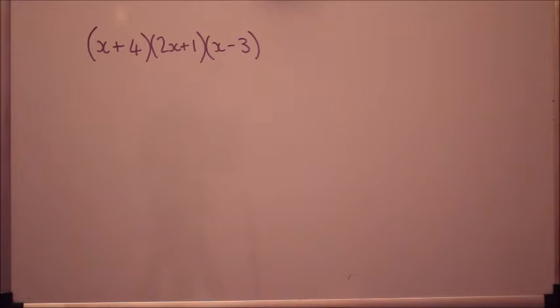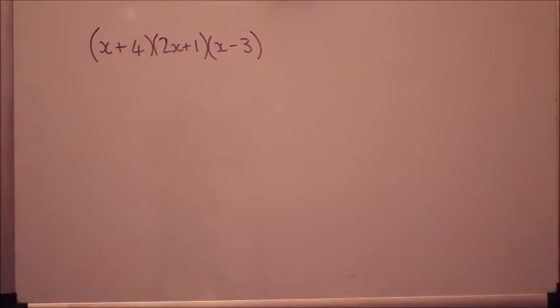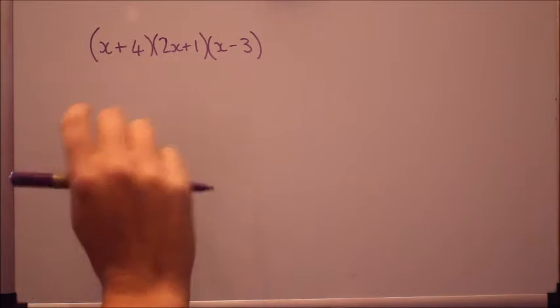First of all today I want to look at what happens if you're asked to multiply together three or more brackets. Now this is very similar to multiplying two brackets together and it's not as daunting as it looks, you can just take it step by step. First of all multiply two brackets together, leave the third bracket and then bring that in later. Let's have a go at multiplying these two brackets together first.